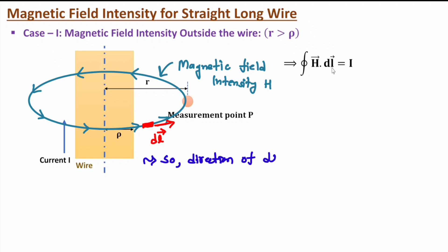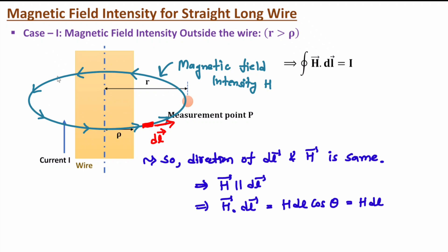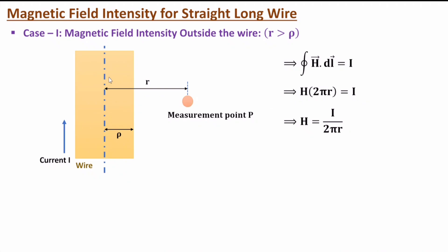At distance r, magnetic field intensity is constant, and the direction of magnetic field intensity and dL are in the same direction. So the dot product gives cos(0°) = 1, meaning H times the integration of dL. The length of the circle with radius r is 2πr, so this integration equals H times 2πr. Therefore, magnetic field intensity outside the wire is H = I divided by 2πr. Outside the wire, magnetic field intensity decreases with respect to distance r; H is proportional to 1/r, so as r increases, H decreases.